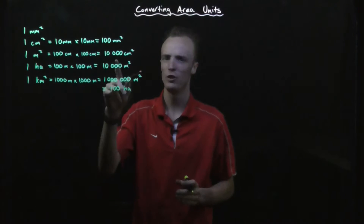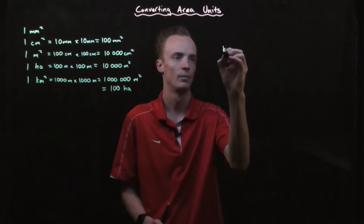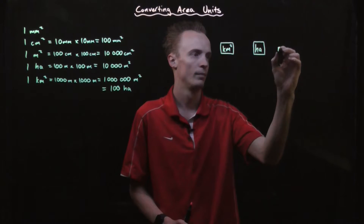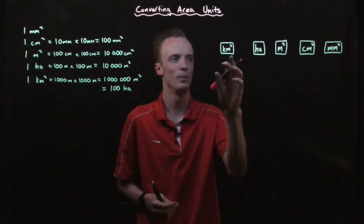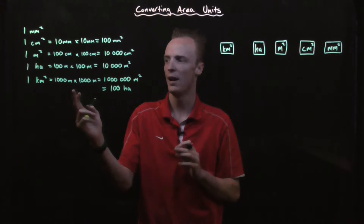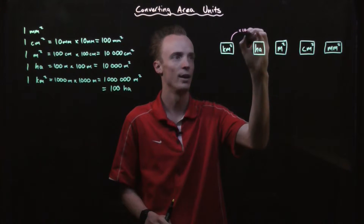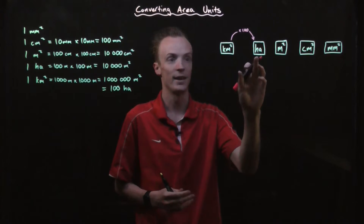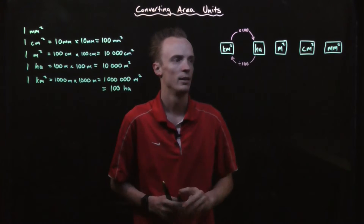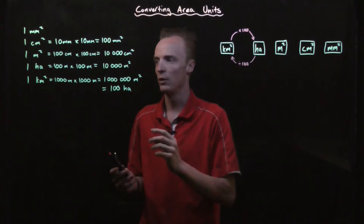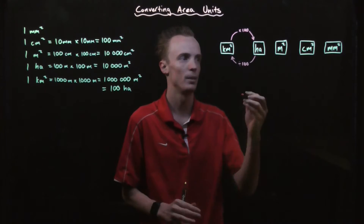I'm going to use this information to create a conversion chart that we can use to convert between different area units. To convert between square kilometres and hectares, there are one hundred hectares in a square kilometre, so to convert I would multiply by one hundred. To go from hectares back to square kilometres, I'd divide. Between hectares and square metres, there are ten thousand square metres in a hectare, so to convert I'd multiply by ten thousand.